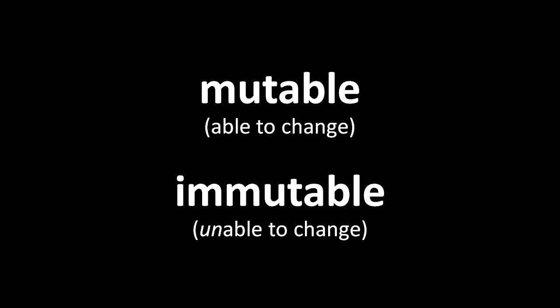In programming, we often make a distinction between data which is mutable and immutable. Mutable data is data which we allow to change, whereas immutable data is data which we do not allow to change.